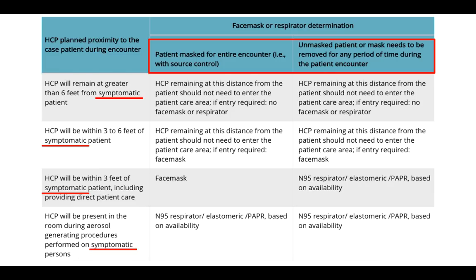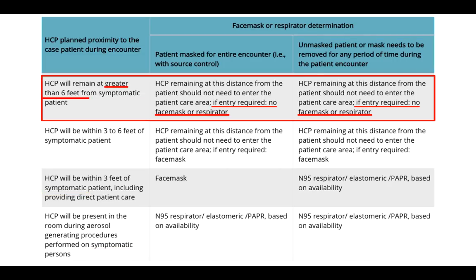For example, Hong Kong and Singapore — although they do not have lockdowns but just social distancing with schools open — do not face a real epidemic in terms of the number of infections. Clearly, if asymptomatic carriers played a big role, we should have seen many more cases in such places. As per CDC, as long as the healthcare provider remains greater than 6 feet from symptomatic patients, no face mask and no N95 is required.